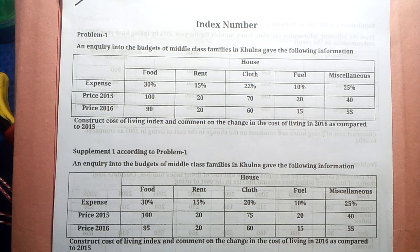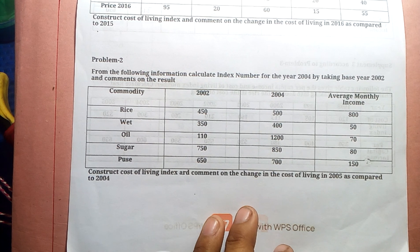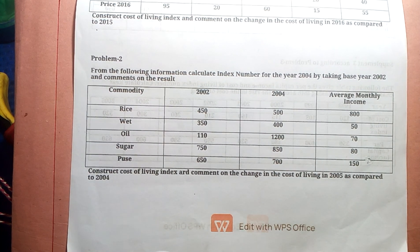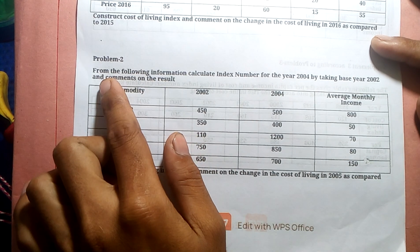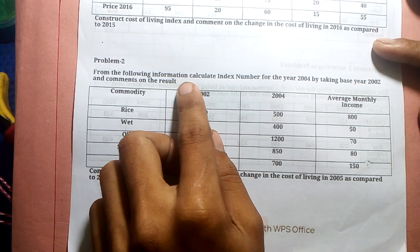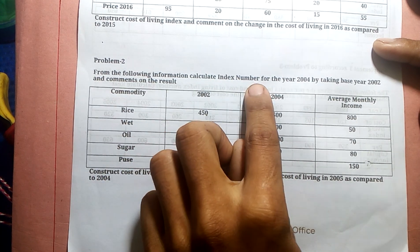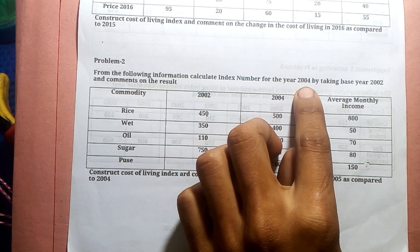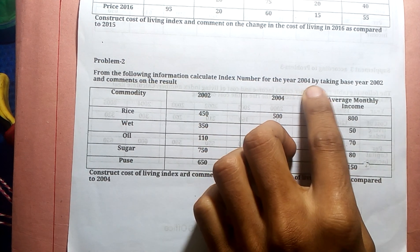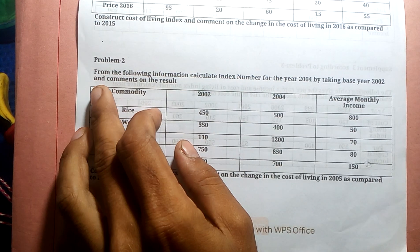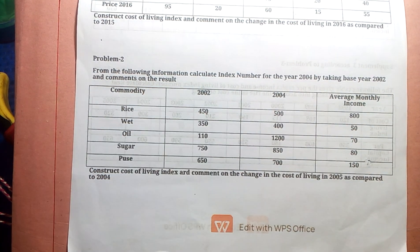Assalamu alaikum warahmatullah. Now we are going to do Problem Number 2. From the following information, calculate the index number for the living year 2004 by taking base year 2002, and comment on the result.